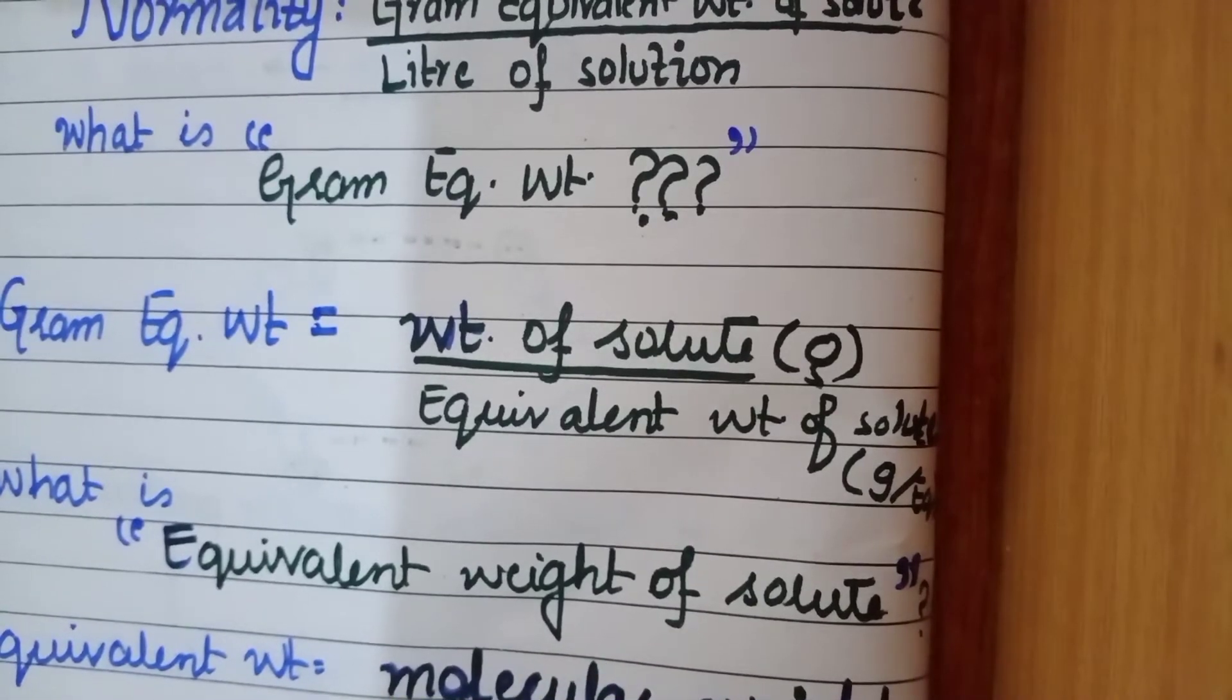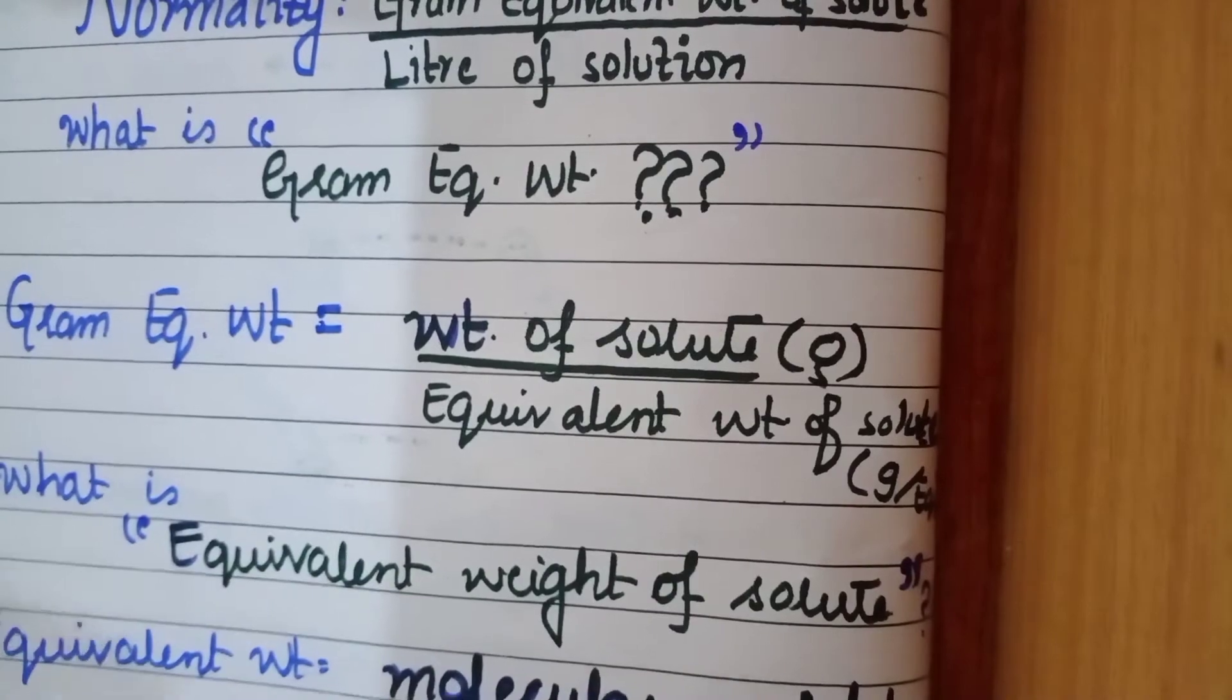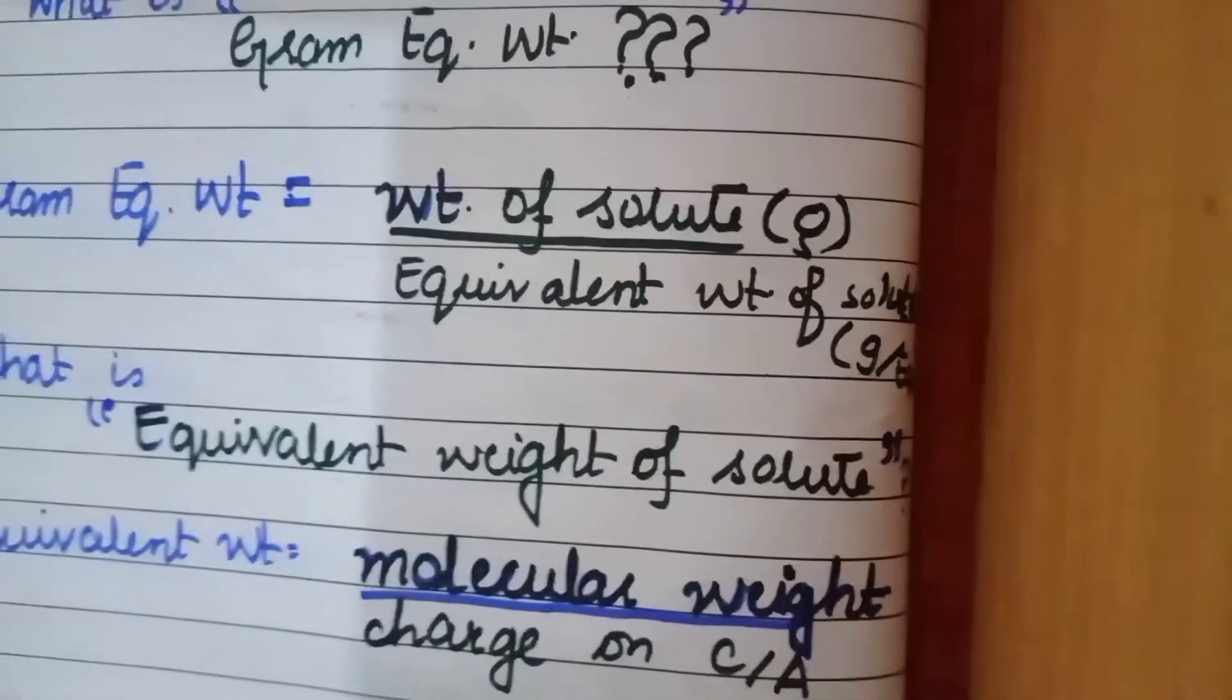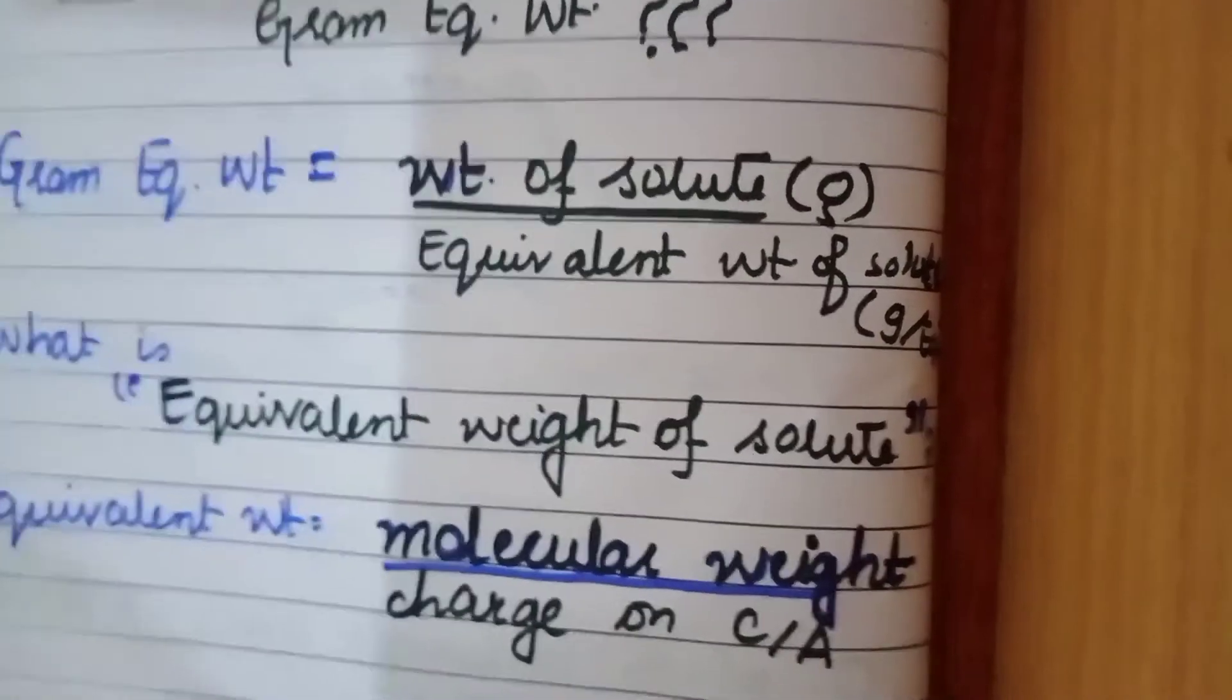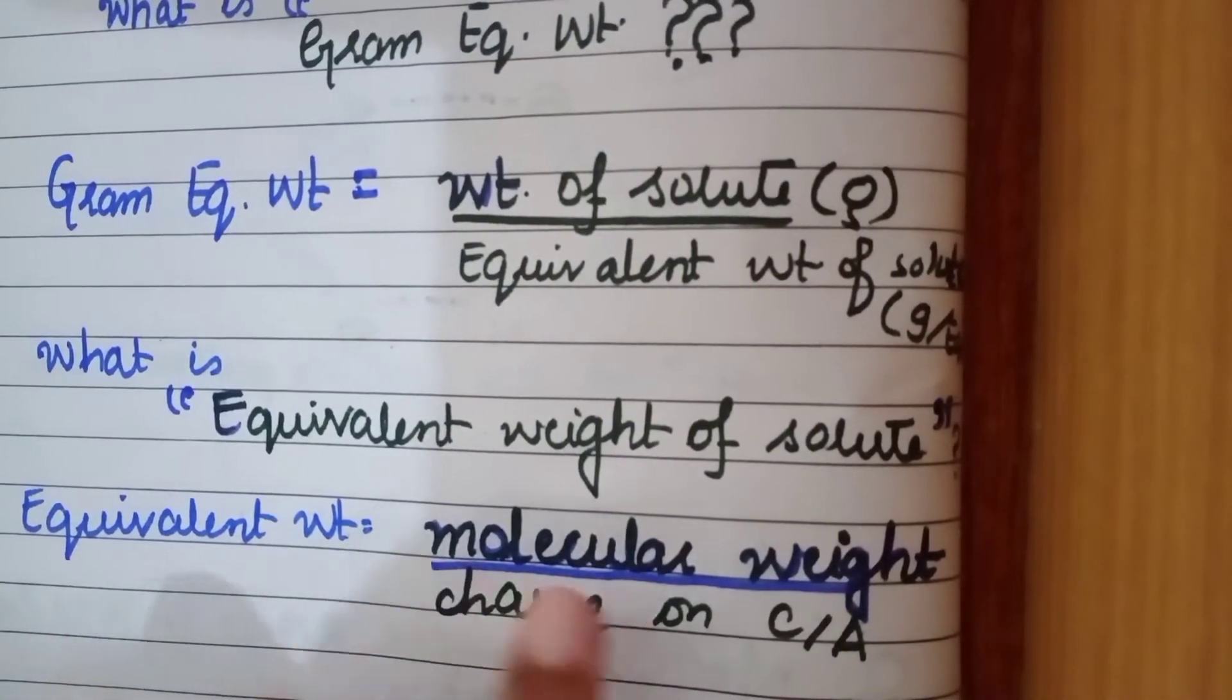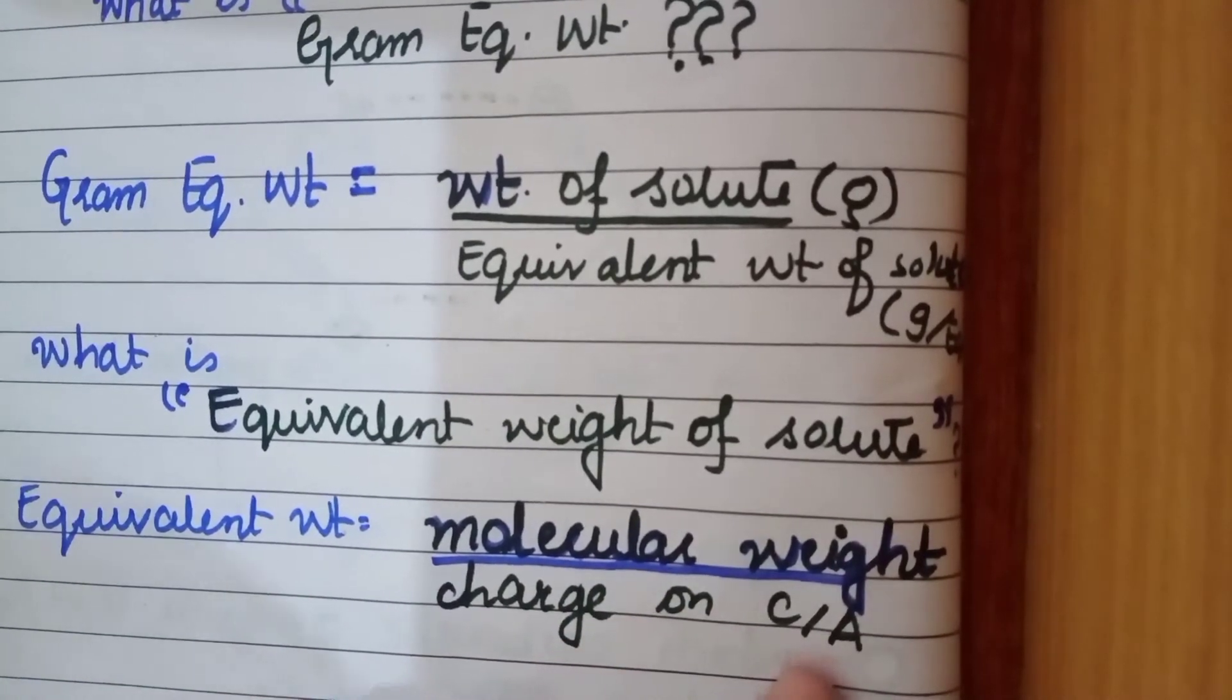Now the problem arises, what is equivalent weight of solute? Okay, now let's go and dissect this formula. Equivalent weight of solute. Now this is the final thing which will lead us to the final formula. Equivalent weight is equal to molecular weight divided by charge on cation or anion.